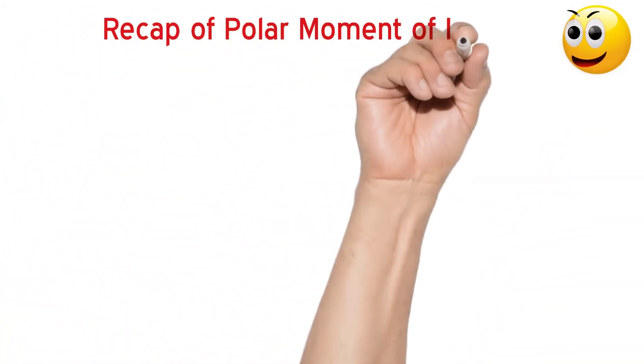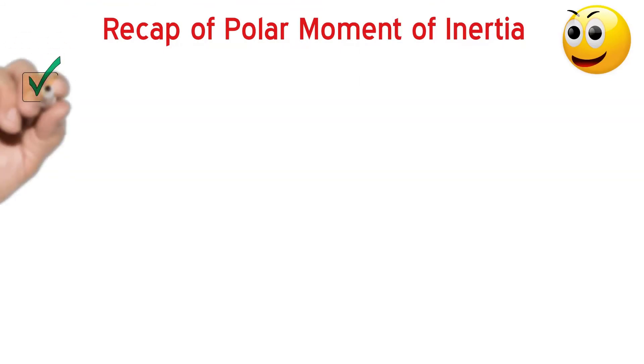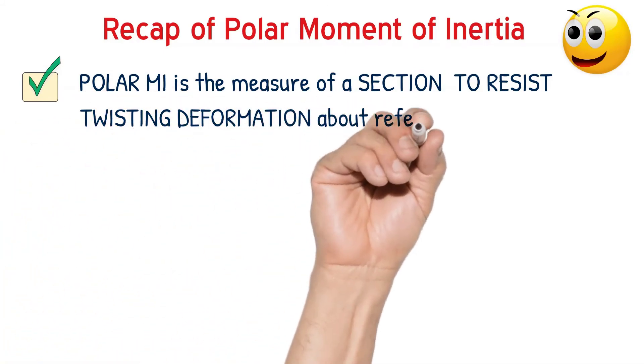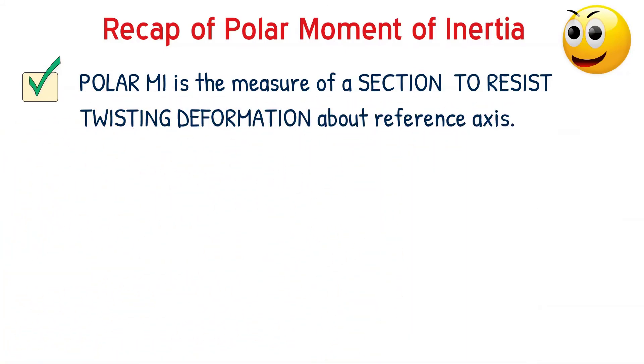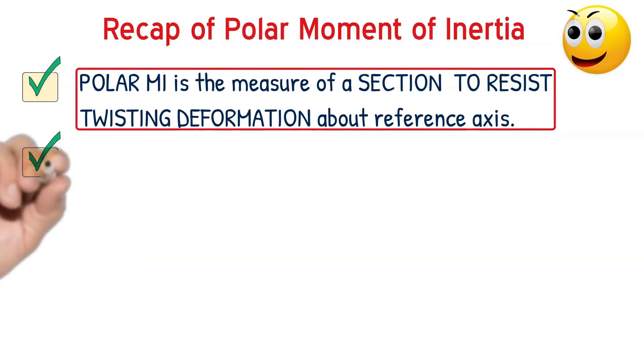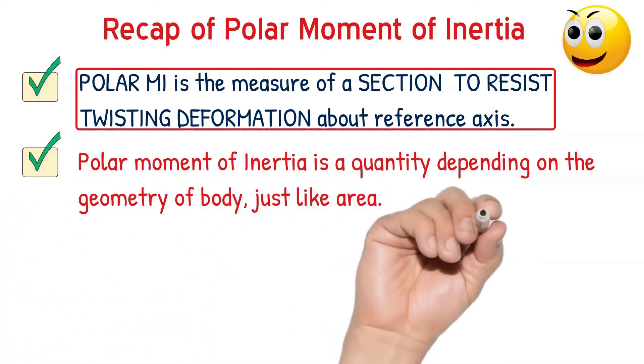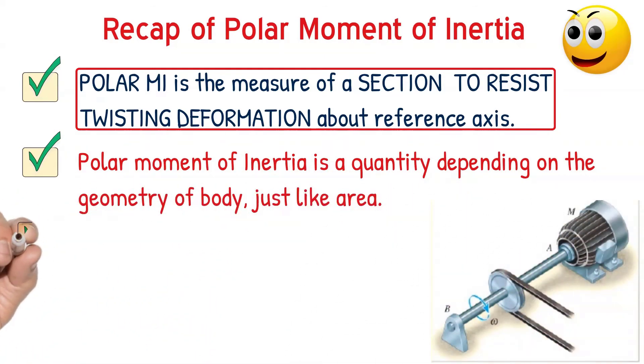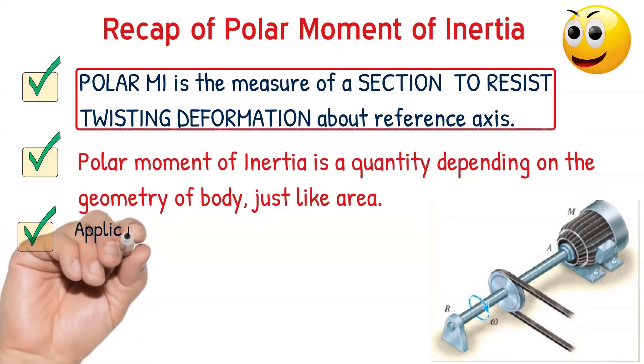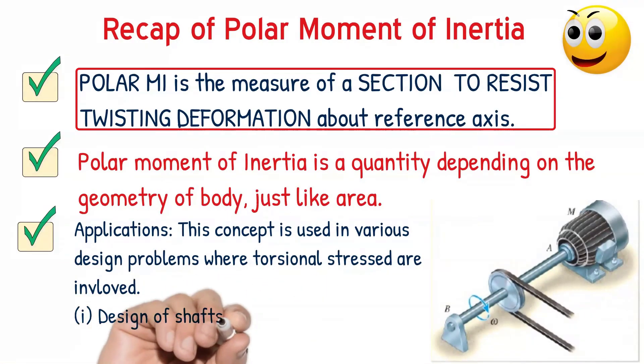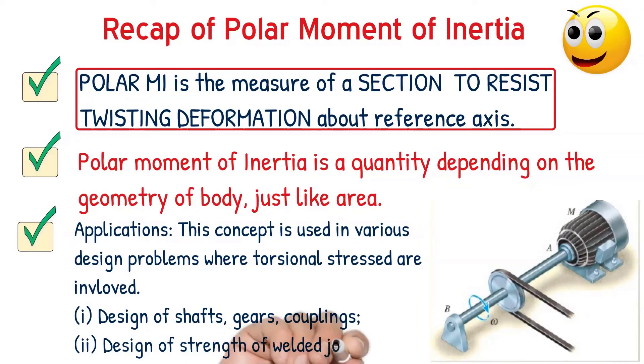Let us summarize the concept of polar moment of inertia. Polar moment of inertia is the measure of resistance of a section against twisting deformation. In simple terms, it is resistance against twisting. This concept is highly useful in the design of shafts, gears, couplings where torsional deformation is involved, and also in the design of strength of welded joints, riveted joints, design of springs and so on.